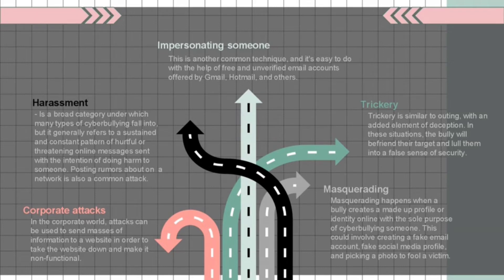Third, impersonating someone. This is another common technique, made easy with free and unverified email accounts offered by Gmail, Hotmail, and others. Bullies create a name similar to the victim's and then go online and act in awful ways while pretending to be the victim. Other attacks in this category include stealing the victim's password, pretending to be the victim while chatting with others, and changing the victim's social media profile.